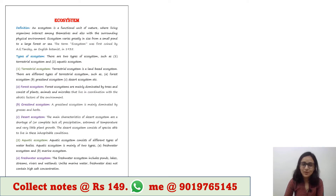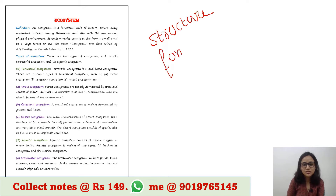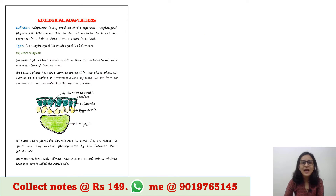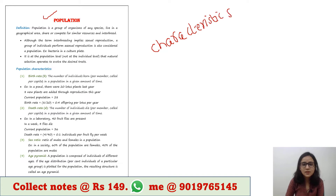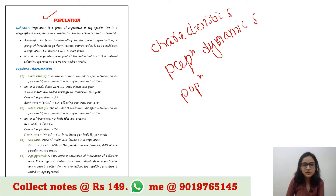Then we have ecosystem — here you will get the structure and function of ecosystem and types of ecosystem. Next we have ecological adaptations. Then it is population, where you will get the characteristics of population, population dynamics, and population stabilization.